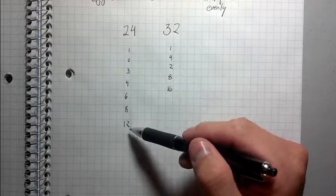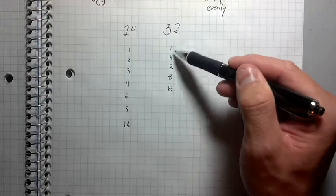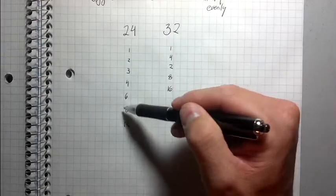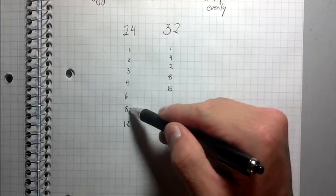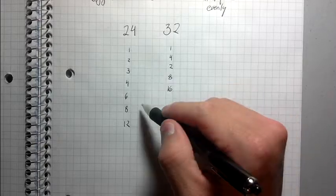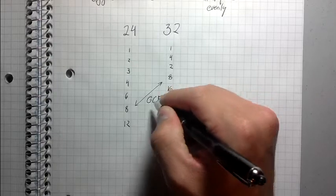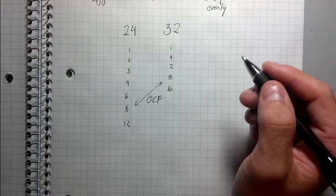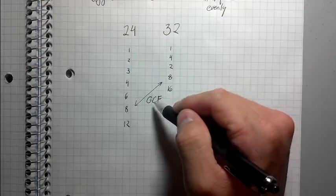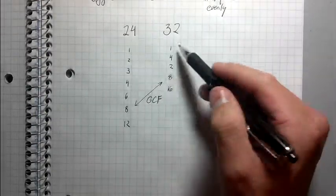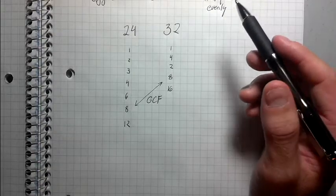See how 8 would be that number? Because 8, even though it's not the largest in this list, and even though it's not the largest in this list, it's the largest number that's in both of these lists at the same time. So there we go. That's my GCF, greatest common factor. And you can test this by just thinking about, try to find a larger number that satisfies both of these conditions at the same time. You're not going to be able to.